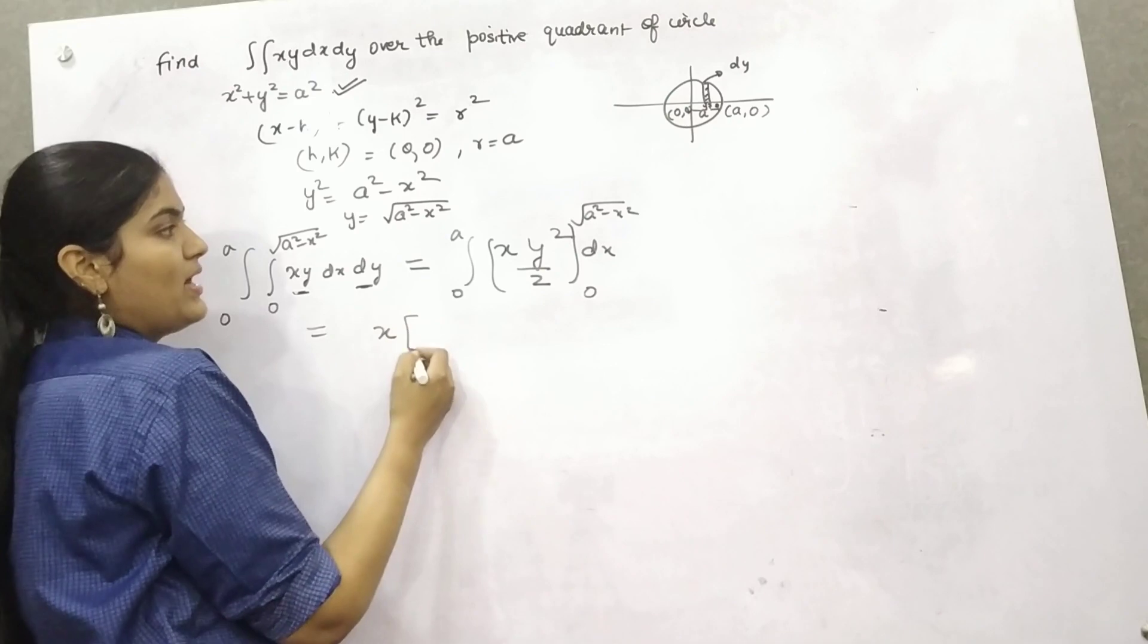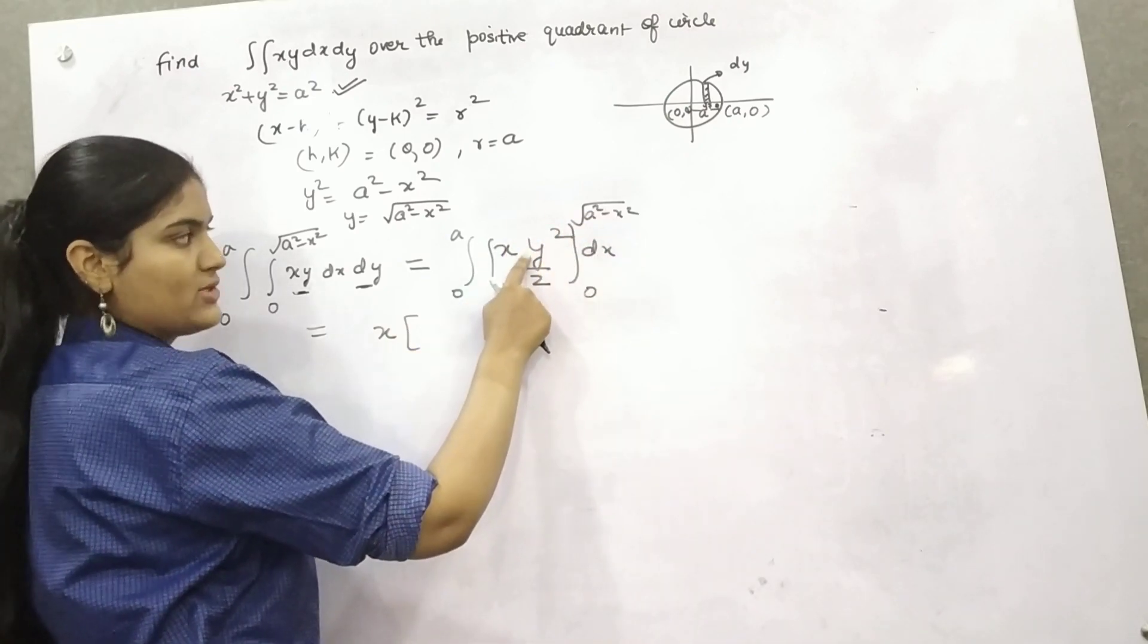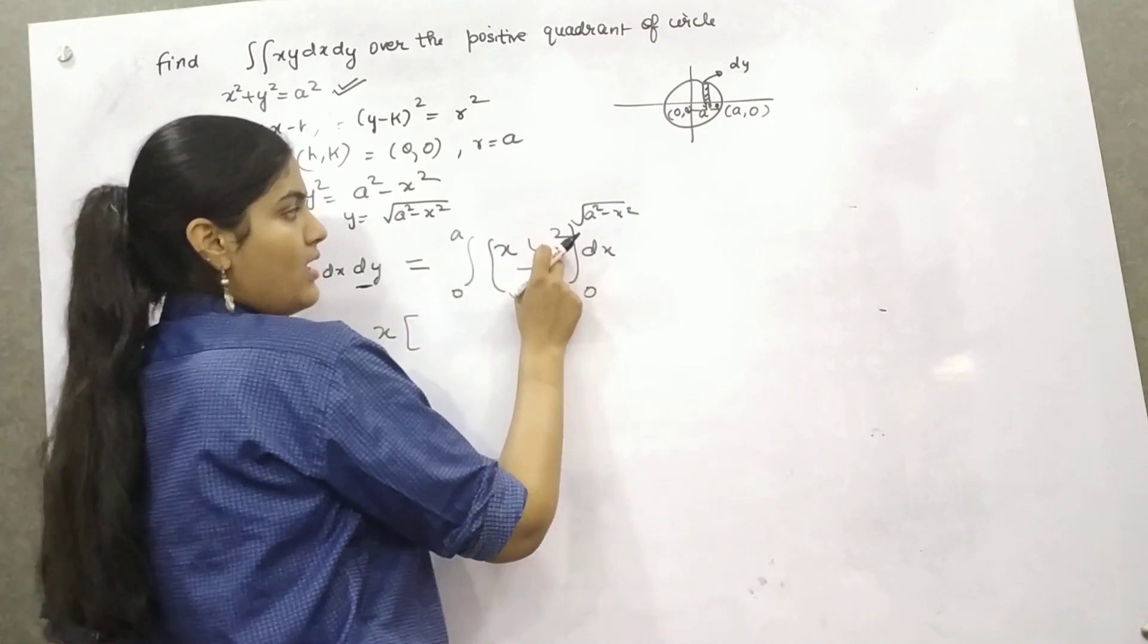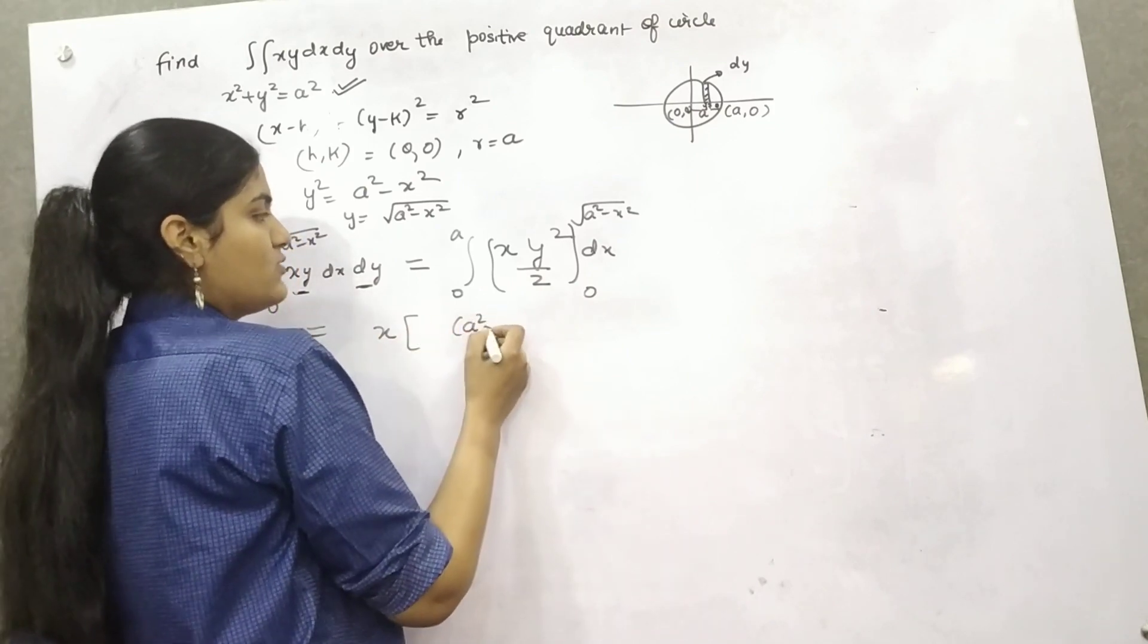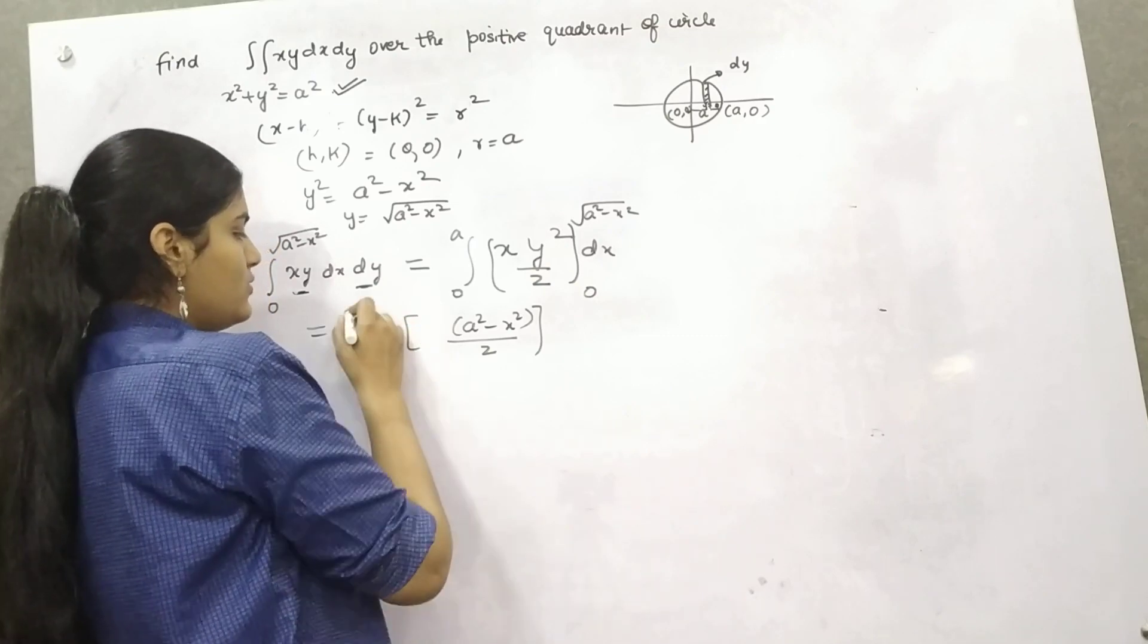So now, upper limit minus lower limit, if you do this, root (a square minus x square), the whole square of that thing will be a square. There is a 2 here already, a square minus x square.